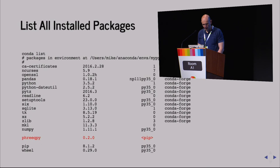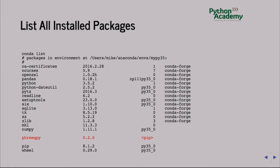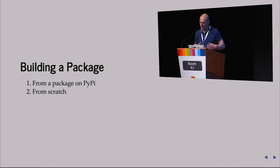Once inside an environment, you can say 'conda list' and it gives you a list of all installed packages — the name, version, and channel. Some packages shown in red were installed via pip. Conda and pip are not contradictory — if a package isn't available via Conda, you can install it with pip, and Conda will recognize those packages. You can use both tools together.